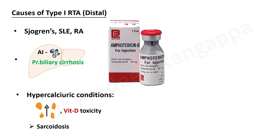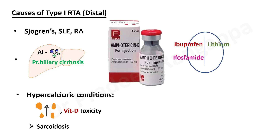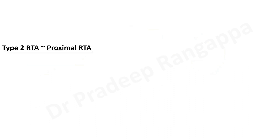Other drugs causing distal RTA include ibuprofen, lithium, and ifosfamide. For all renal tubular acidoses, certain drugs are known causes — these are the drugs which specifically cause distal renal tubular acidosis.